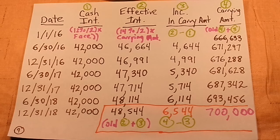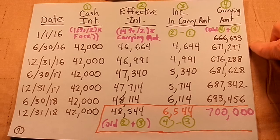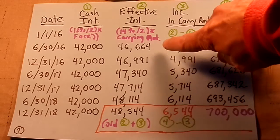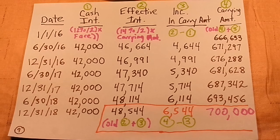Effective interest is different because here we take the market rate of 14% and divide by two — because the bond pays semi-annually — arriving at a 7% semi-annual market rate. But the effective interest method requires us to multiply this by the carrying amount, not the face amount. So we take $666,633 times 7% and get $46,664. The amortization amount — the amount we actually remove from the discount — is the difference between $46,664 in effective interest and $42,000 in cash interest, giving us $4,664 to amortize, which raises the carrying amount to $671,297.